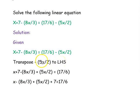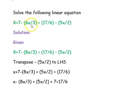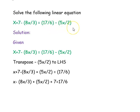First question: solve the following linear equation. The equation is x plus 7 minus 8x divided by 3, equal to 17 divided by 6 minus 5x divided by 2. We are writing the equation as such.